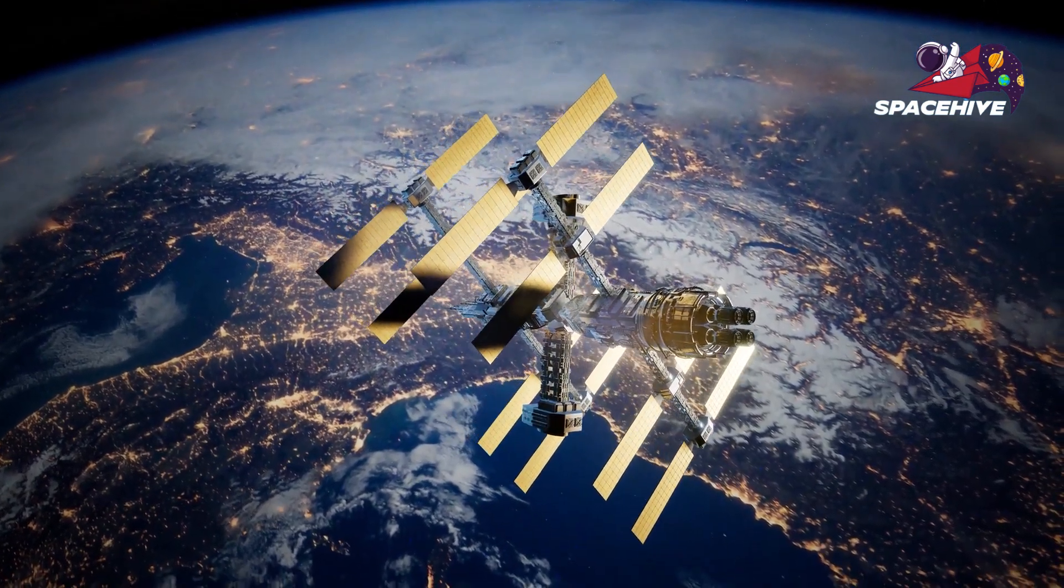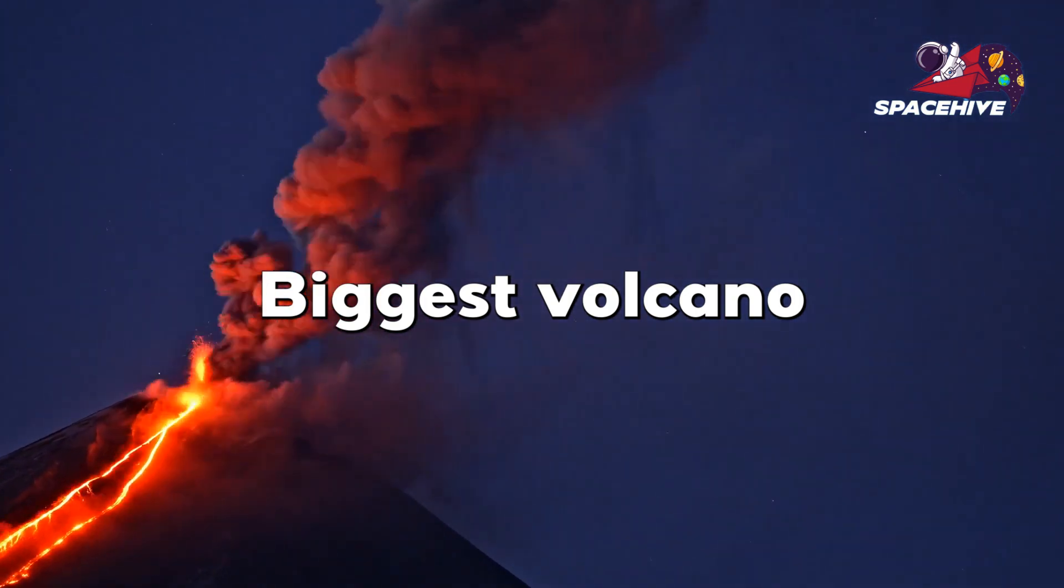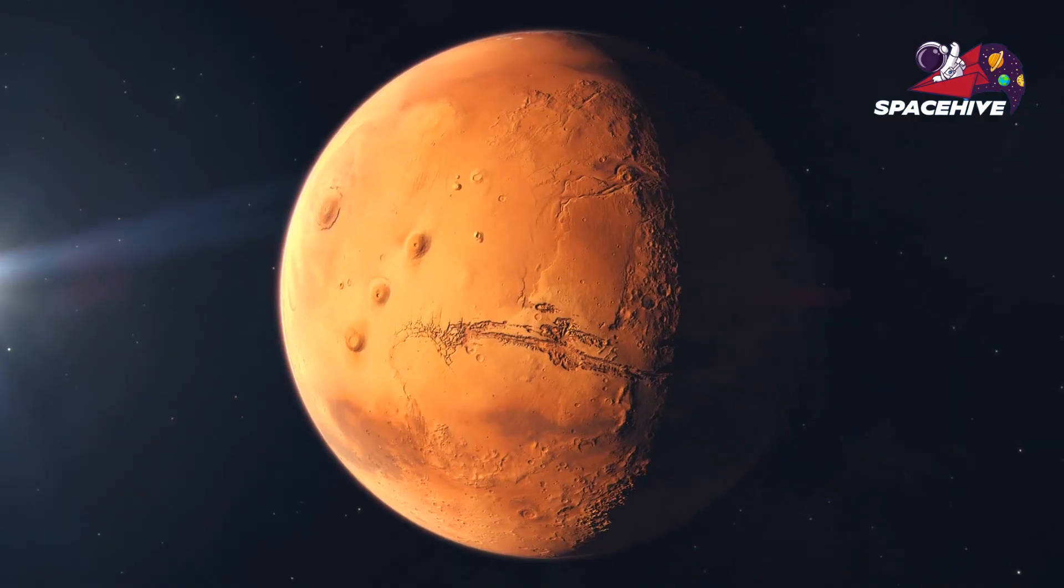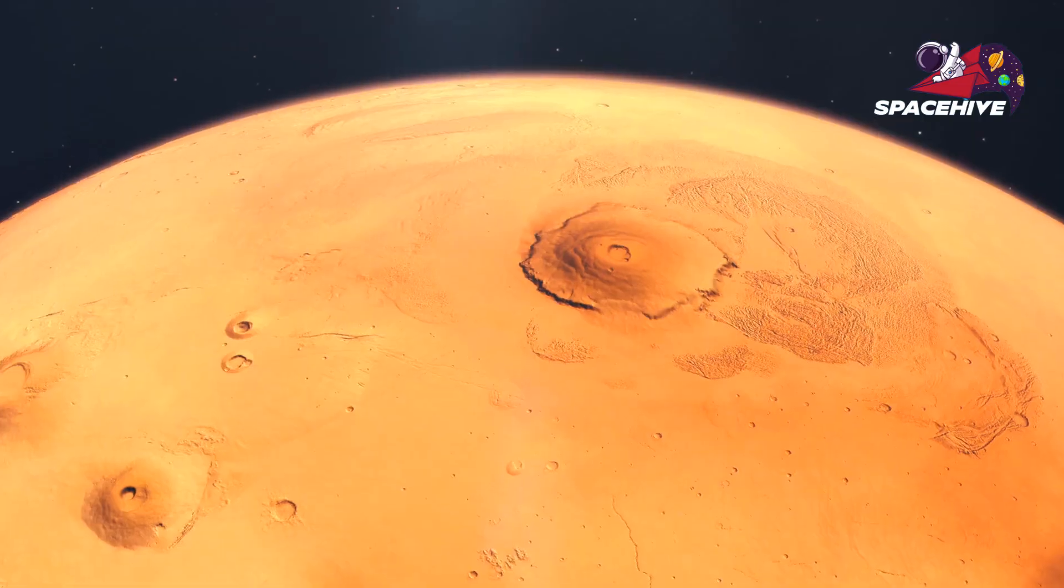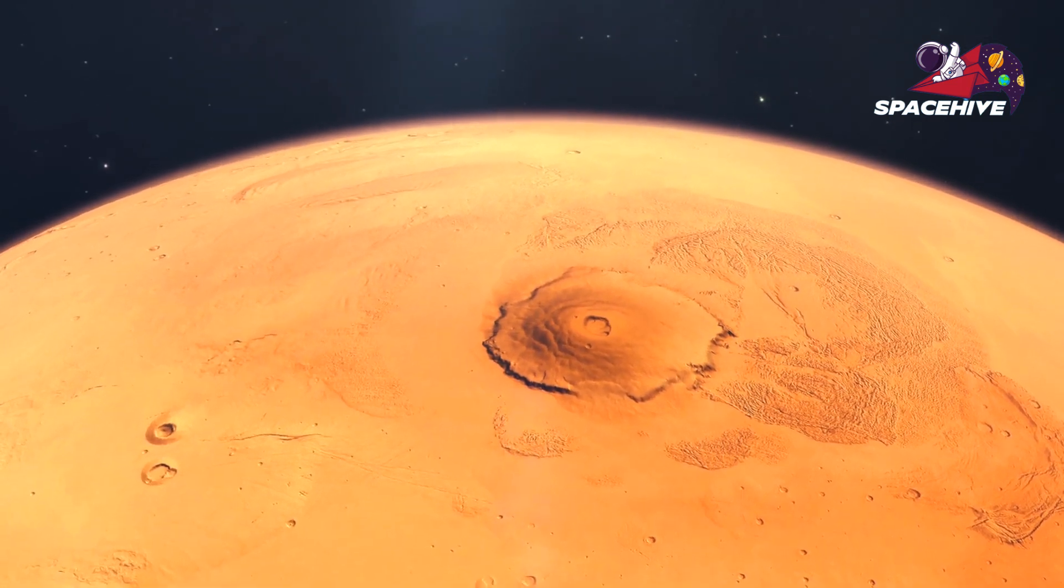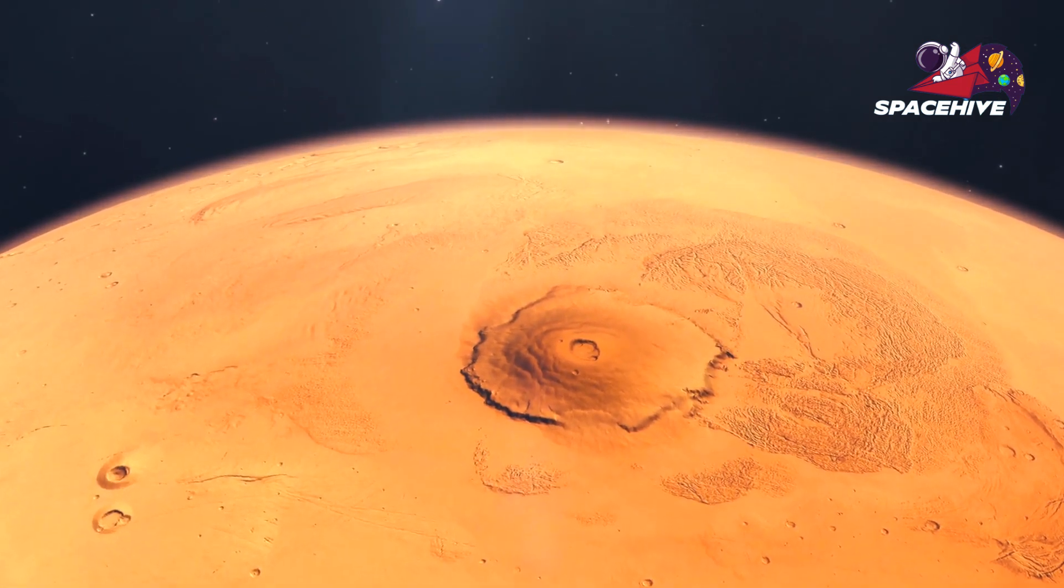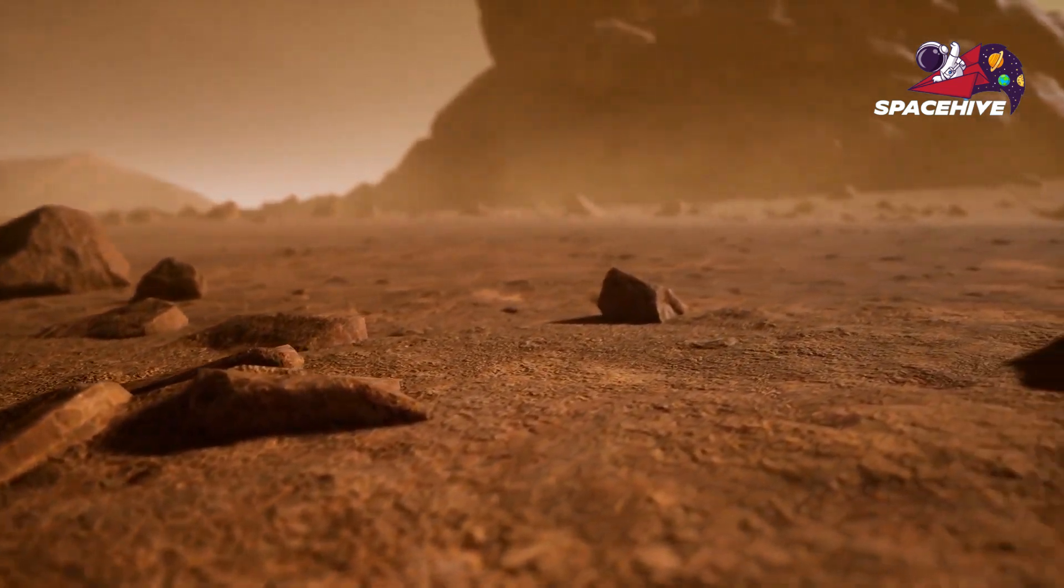Number 7. Did you know that the largest volcano in the solar system is not on Earth, but on Mars? It's called Olympus Mons, and it is over three times taller than Mount Everest. It is so massive that if you were to stand at the base of the volcano, you wouldn't even be able to see the top. The summit is over 21 kilometers high.